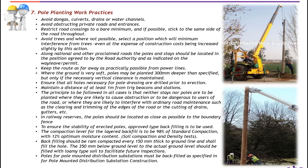Number eleven: in railway reserves, poles should be located as close as possible to the boundary fence. Number twelve: to ensure the stability of erected poles, an approved type of backfilling is to be used. The compaction level for the layered backfill is to be 98% of standard compaction with 12% optimum moisture content while performing compaction and density tests.